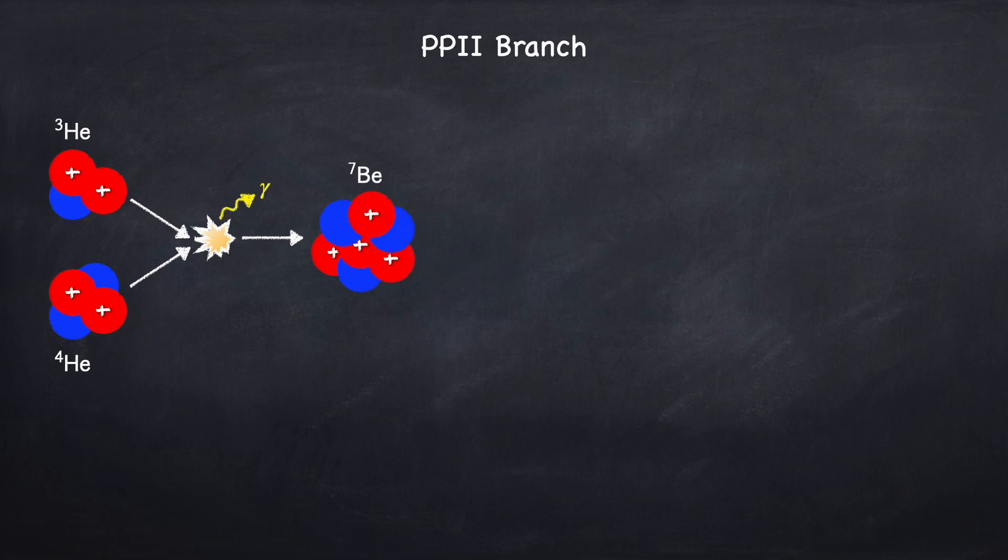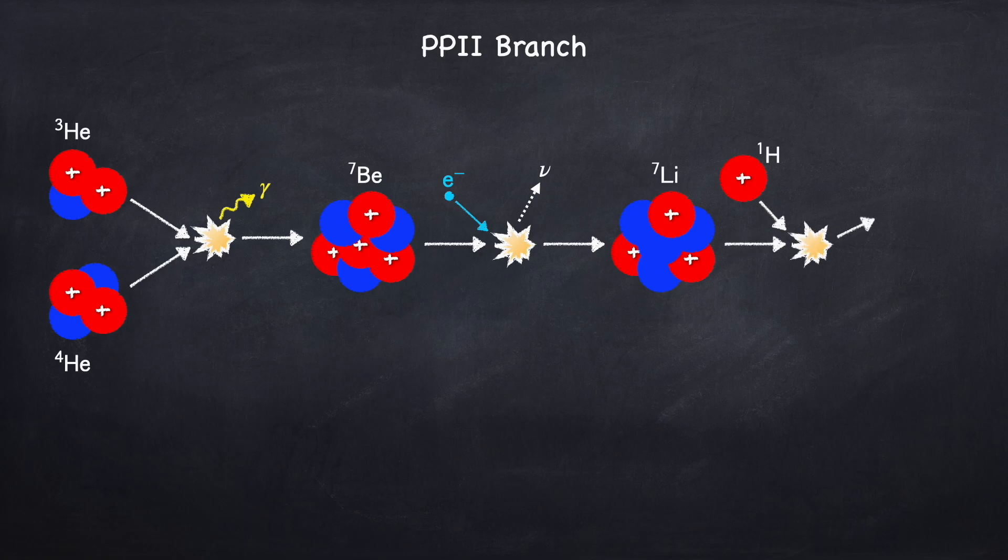Beryllium-7 is then going to absorb an electron and convert into lithium-7. And recall, as I said, any time you have electron or positron emission or capture, you also have neutrinos involved. Next, lithium-7 will bump into another proton, and the whole thing will break up into two helium-4 nuclei. Now you might think here we've created two alpha particles, but remember we have to put one in initially. So the net is that we've only created one helium nucleus. So that covers the PP2 branch.